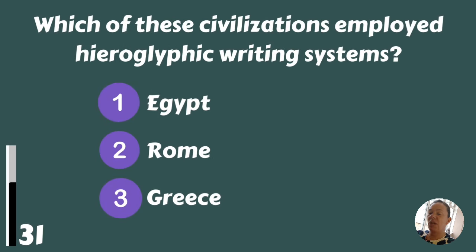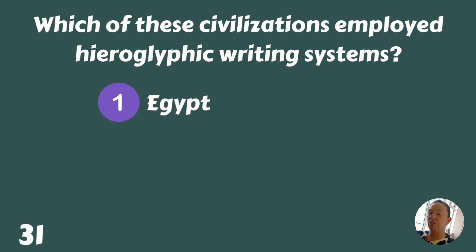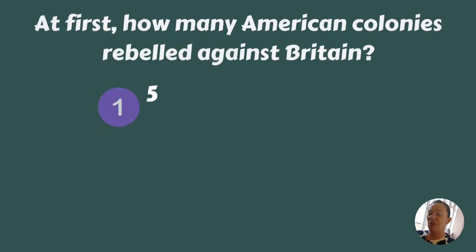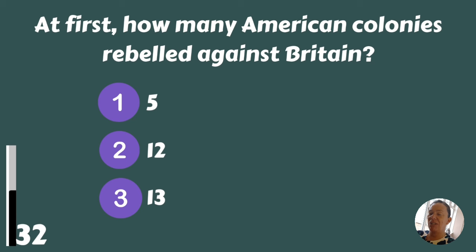Which of these civilizations employed hieroglyphic writing systems — Egypt, Rome, or Greece? Egypt. At first, how many American colonies rebelled against Britain — 5, 12, or 13? 13.